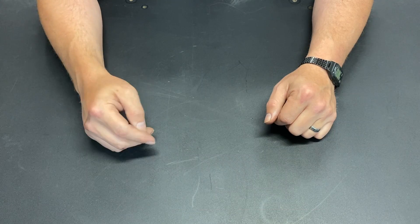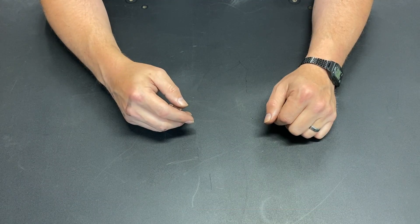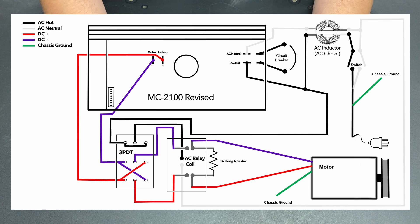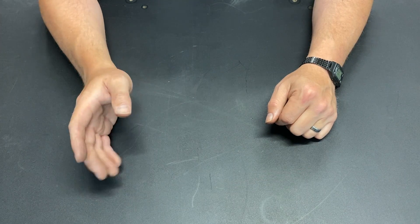Now let's say you're using an MC60. This is what the schematic would look like. And lastly we have the MC2100. As with the other two setups, the braking system goes in place of the double pole double throw switch and wires into the system.